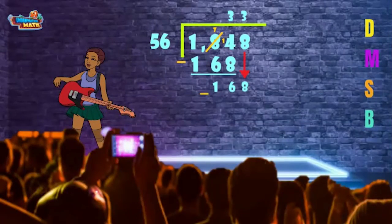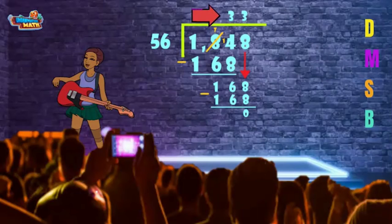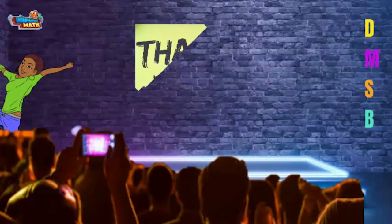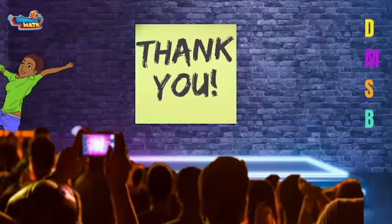Are we finished? Not quite yet. Divide, multiply, subtract, bring down — we zeroed out! Our answer shows us we have 33 rows of 56 people each, equaling 1848. Fabulous people, you have been a great audience. Thank you and good night!